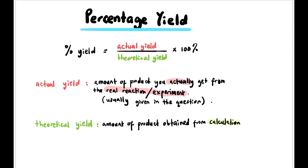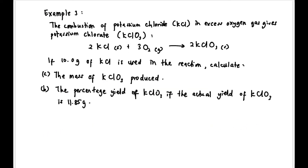Percentage yield = (actual yield ÷ theoretical yield) × 100%. Actual yield is the amount of product you actually get from the experiment. Theoretical yield is the amount of product calculated from stoichiometry — like what we've been calculating. Let's look at Example 3.